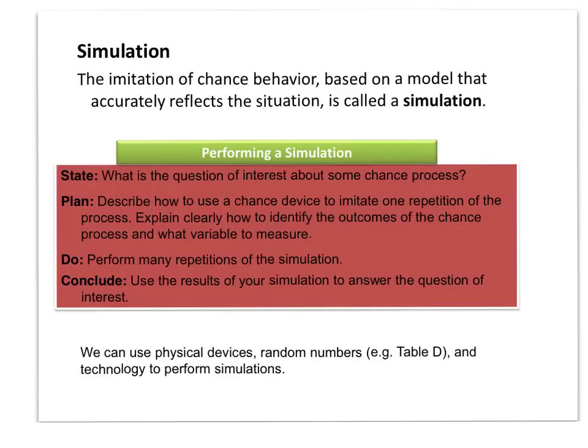State is what is the question of interest, and this question is, what's the probability of Kobe Bryant hitting five free throws in a row? The plan would describe how to use a chance device to imitate one repetition of the process. So let's assume that Kobe Bryant can make 80% of his free throws, which is four out of five. So I could put slips of paper in a hat, where eight of them have the word make in them, and two of them have the word miss. And I would randomly pick one piece of paper at a time, make or miss, put it back in the hat, mix them up, pull out another one.